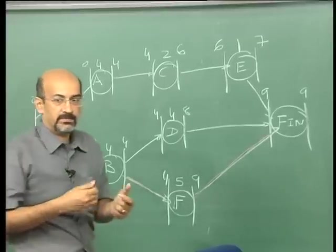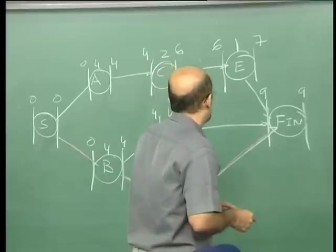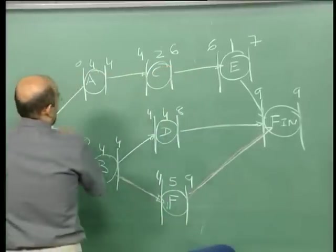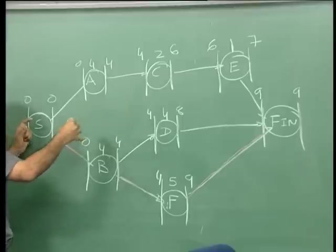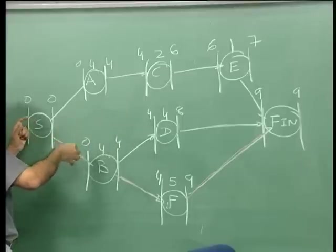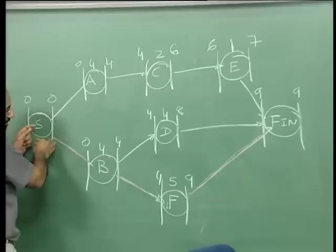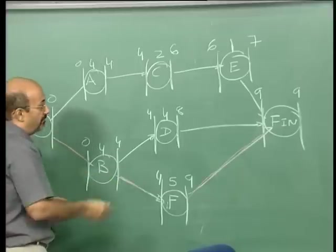Shall we start, so that we can then solve it. I have done only the forward pass here, but that gives us an idea — simple network. We can see where things go and the critical path is going through B and F.